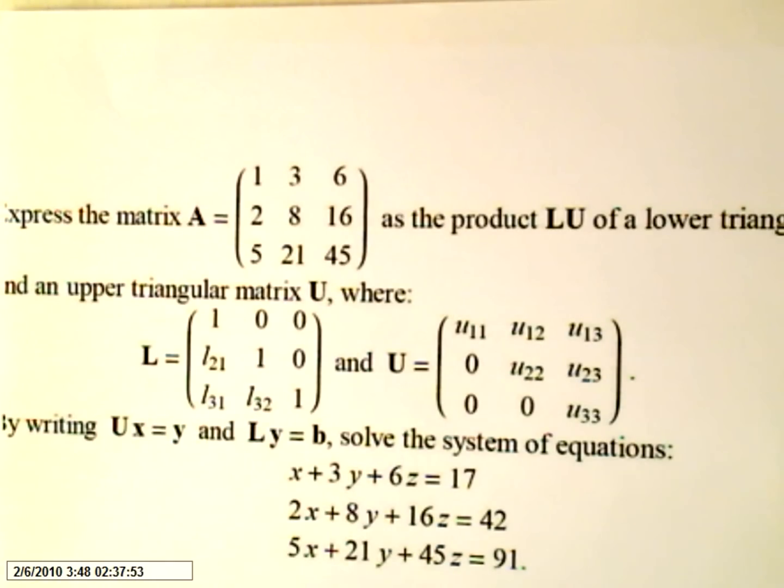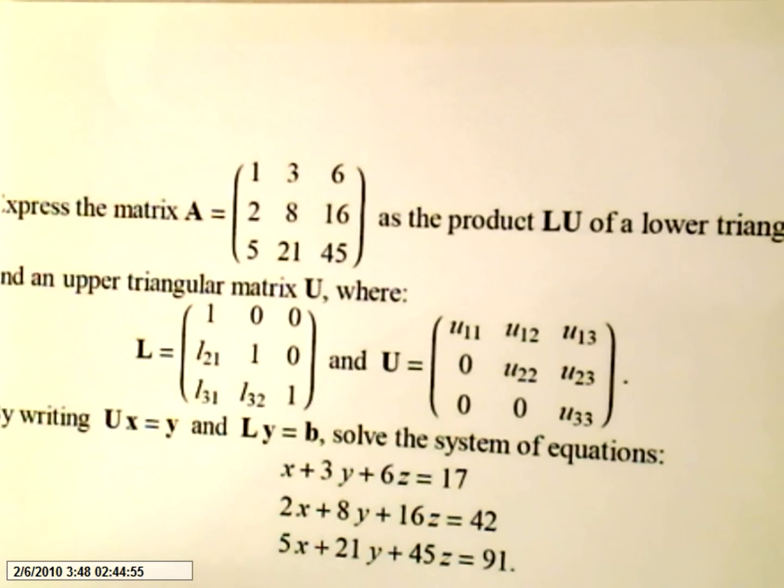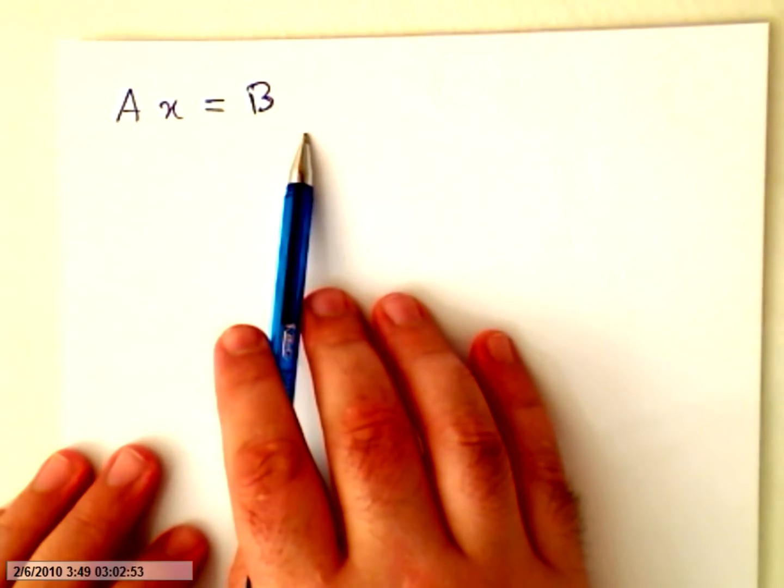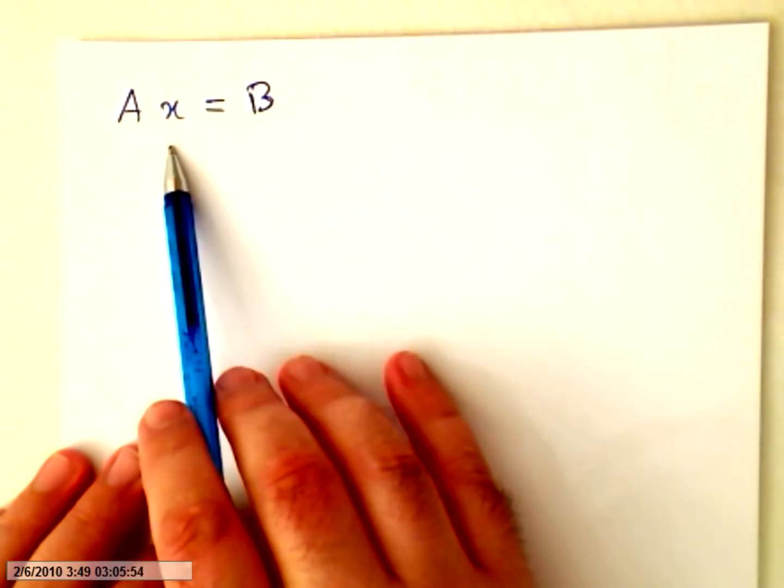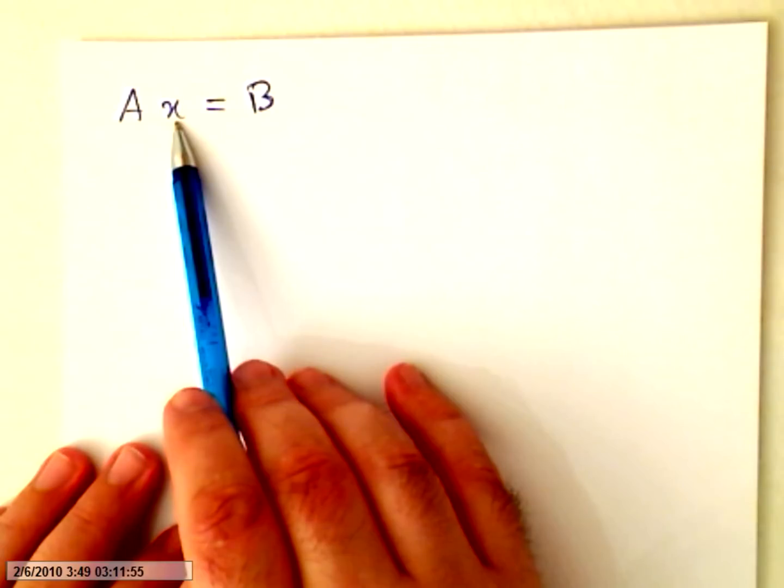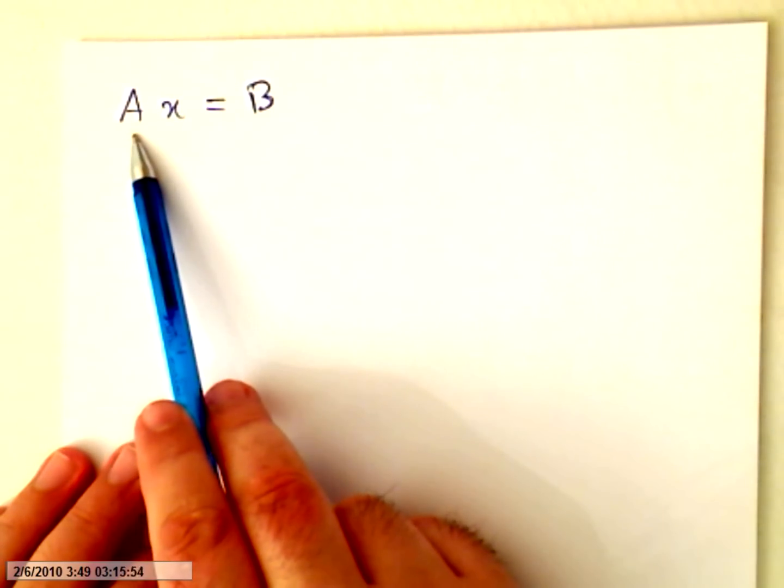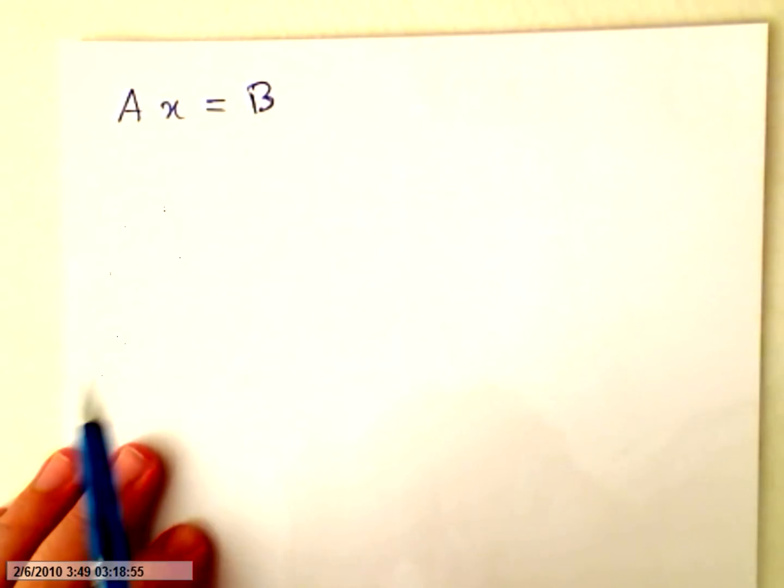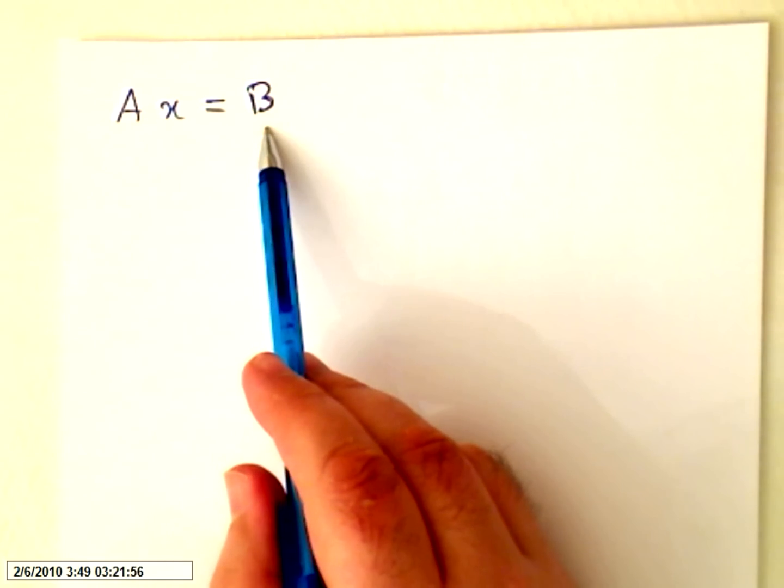So, how can we do that? Well, first, we are used to A times X equals B. That's the other way of solving a linear system. Here we have a matrix with the variables, here with the coefficients, and here with independent terms.